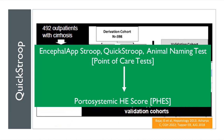In summary, for point-of-care testing at the OPD, only two tests are reliable: the Encephalapp Stroop test and the Animal Naming Test. If either is abnormal, I personally recommend proceeding to PHES, because it has implications for prognosis and treatment decisions.